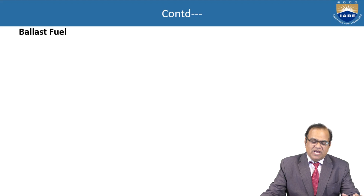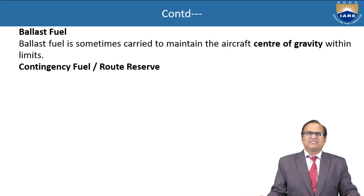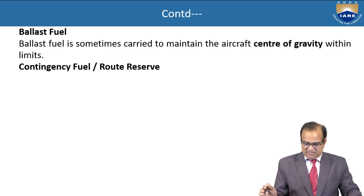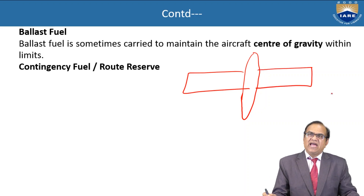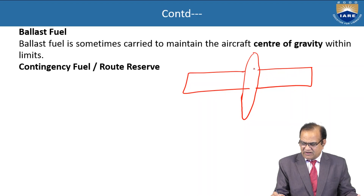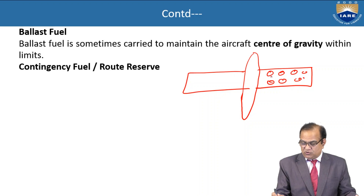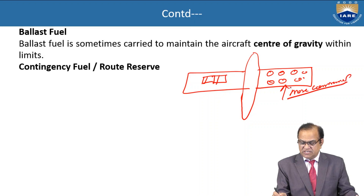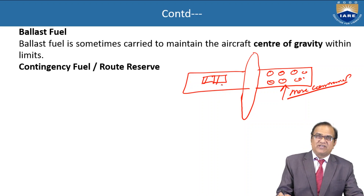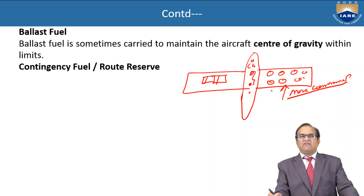Next is the ballast fuel. Ballast means balancing of the aircraft. Sometimes fuel is used for ballasting purposes. Ballast fuel is sometimes carried to maintain the aircraft's centre of gravity within limits. If the weight of passengers or cargo is more on one side, the ballast fuel on the other side — which is not consumed — acts as a ballast to maintain the CG within the given limits of the aircraft.